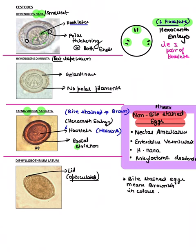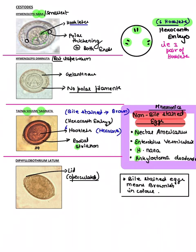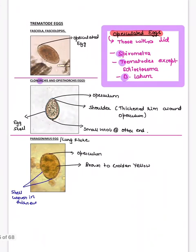An important mnemonic: non-bile stained eggs — remember 'NEHA': Necator americanus, Enterobius vermicularis, Hymenolepis nana, and Ankylostoma duodenale. Bile-stained eggs are brown in color. For example, Diphyllobothrium is brown. But H. nana eggs do not look brown — hence they are non-bile stained eggs.